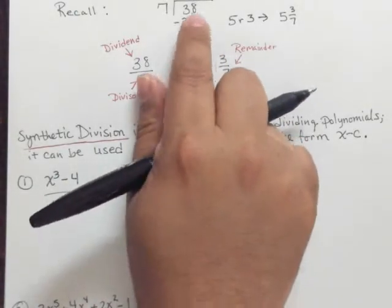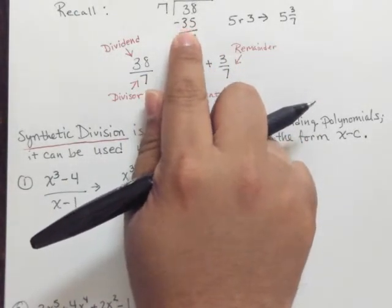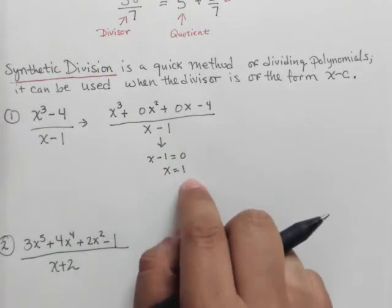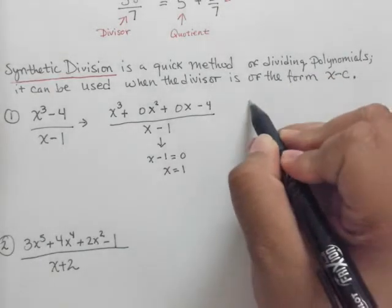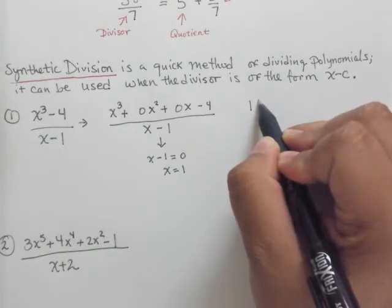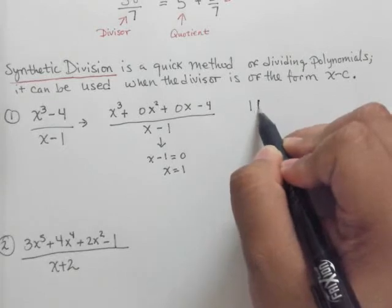But here, we had to subtract. By doing this right here, taking the opposite of this, or setting the denominator equal to 0, I avoid having to actually do subtraction. And we just add integers. So I'm going to write my 1 like this,